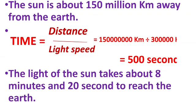The distance between the sun and earth is about 150 million kilometers. We divide by the speed of light, which is 3 lakh kilometers per second. When we divide it, we get 500 seconds, and that equals 8 minutes and 20 seconds.